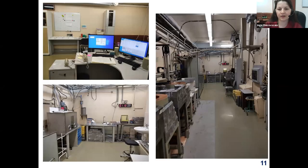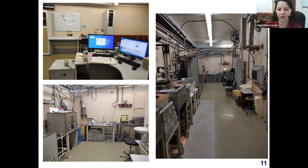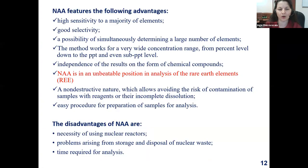This is how our installation looks: we have some rooms where we have the control panel, and there are rooms where we work with radioactive samples, which are manipulated before and after irradiation. We have seven pure germanium detectors, which we use to measure the gamma spectra, which are processed by me and my colleagues.